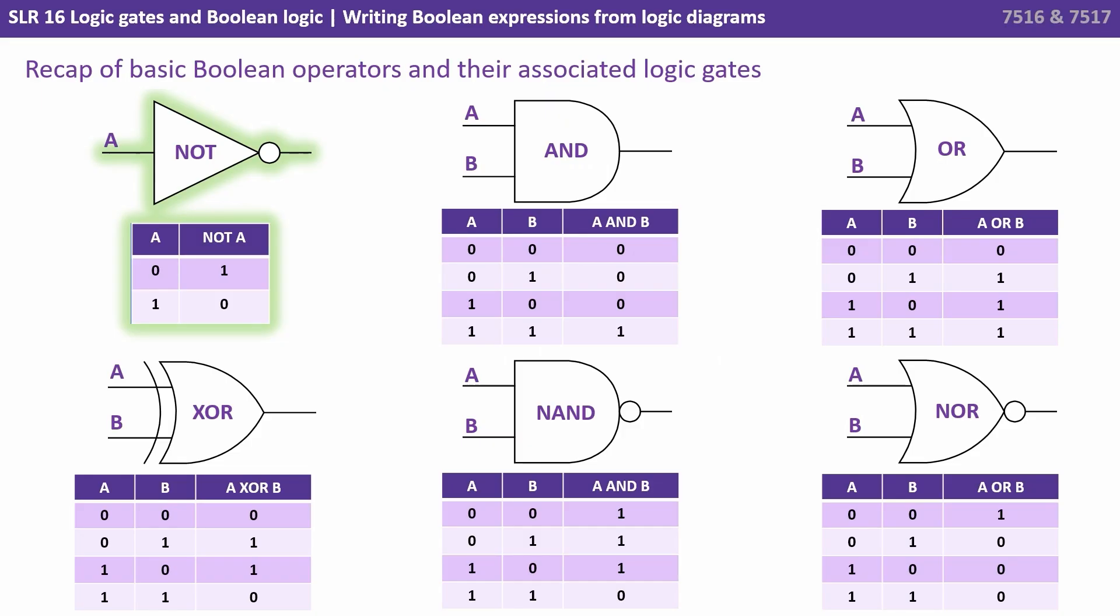Let's start with a quick recap of the Boolean operators and their associated logic gates. We have the NOT gate, the only gate that takes one input. It reverses the input.